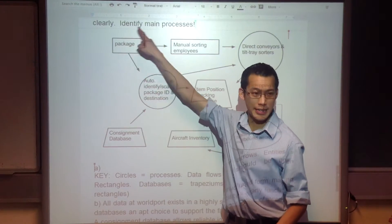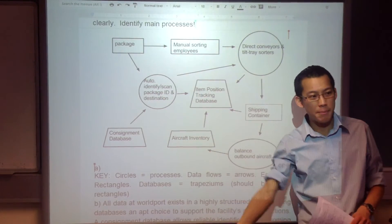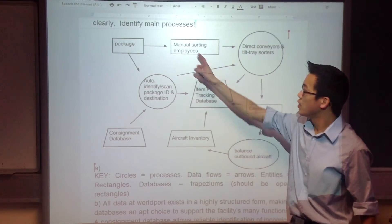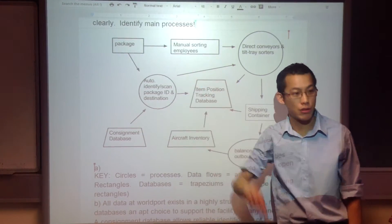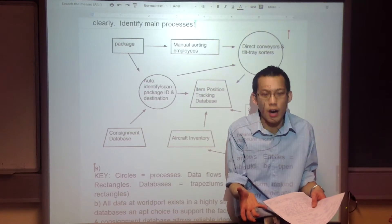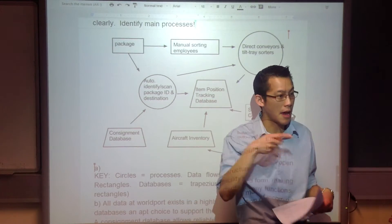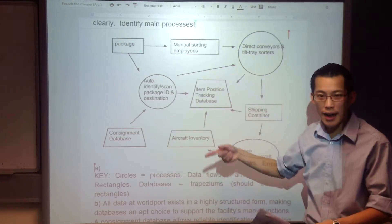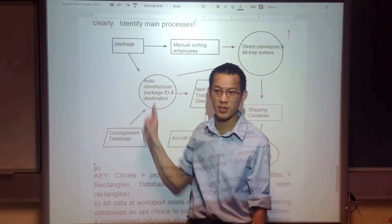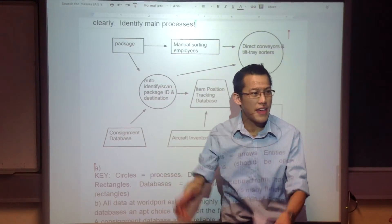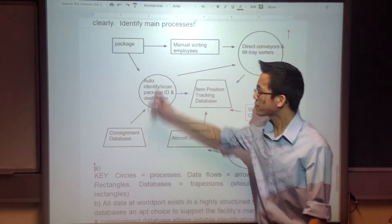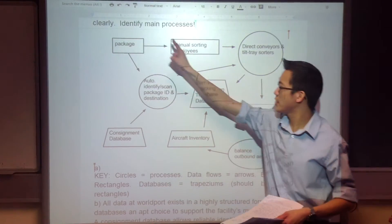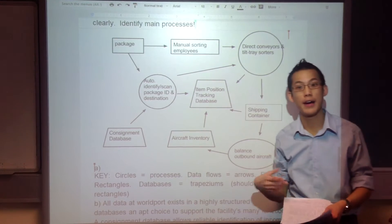The entities are these rectangles. They're only important if they're actually providing data into the system. So the manual sorting employees — they do that, because they look at the package and think, the system couldn't read it but I can, and I put it in the right place because I can read the data. But the person who puts the package onto the conveyor before it gets into Worldport — he's not providing data in, he's just moving stuff. So you only count these entities if they're actually providing data in.